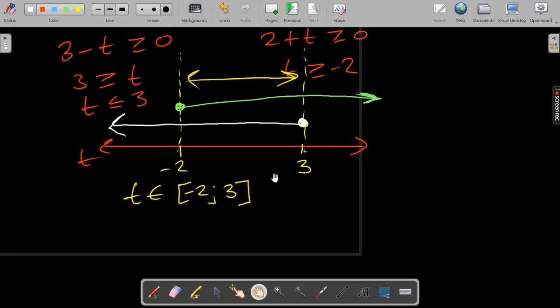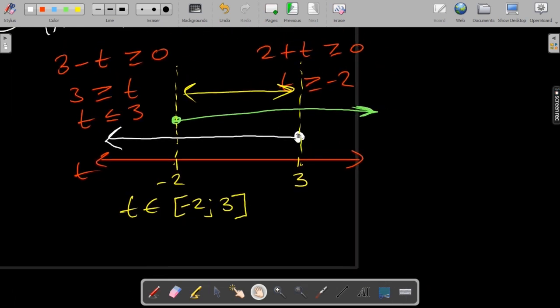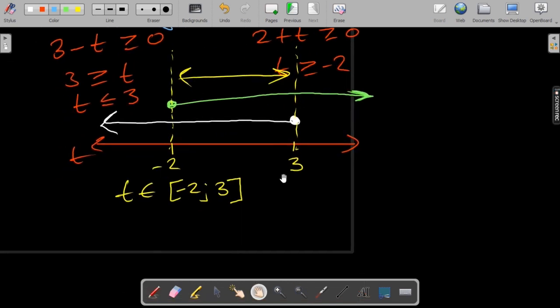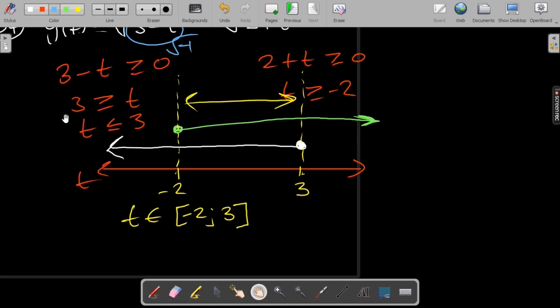The same applies if you try to pick a number which is to the right of 3. So let's say 4. If you pick a 4 this one will be negative because here you have square root of minus 1. And any other number to the left of minus 2.